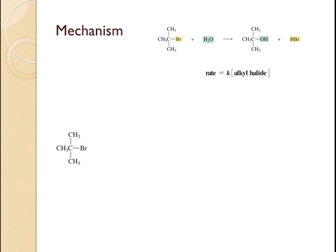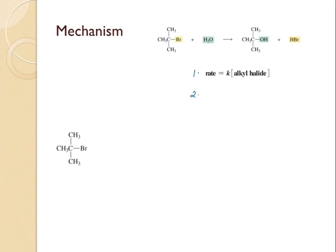They also found out that tertiary alcohol halides were more reactive in an SN1 reaction, whereas the primary and methyl halides did not even react. So the tertiary alcohol halides are more reactive, whereas the primary and methyl halides did not undergo any reaction.